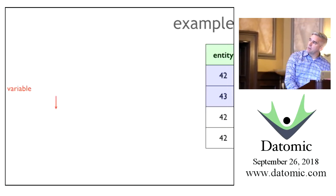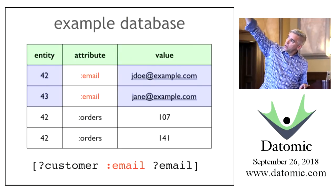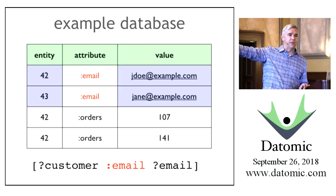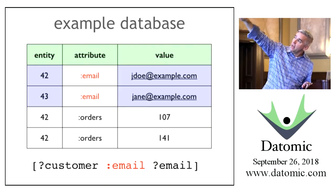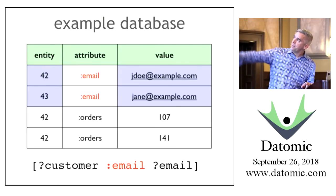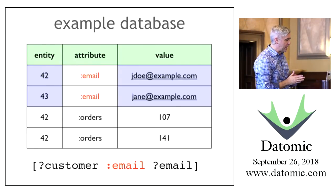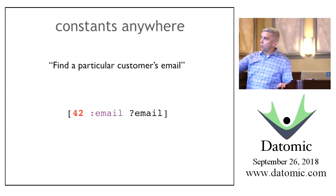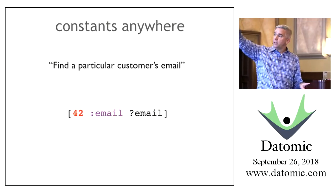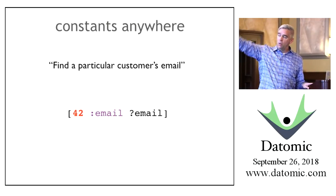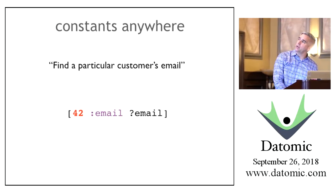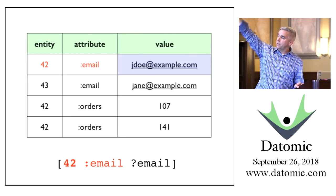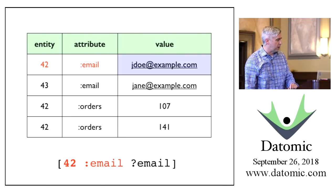Our database has two things whose attribute is email—the first two rows match. Customer is going to be bound to 42 and 43; email is going to be bound to jdoe and jane. You could have constants anywhere: entity is 42, attribute is email—we're only looking for a particular value. That data pattern matches one row and sets email to the set that includes jdoe@example.com.